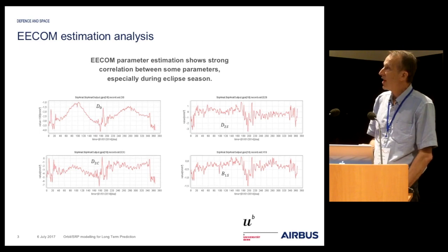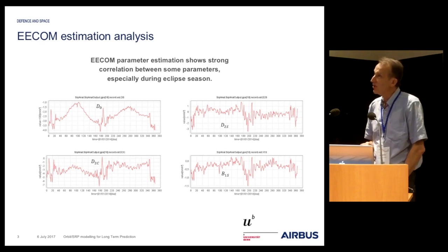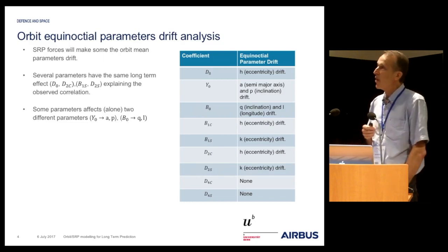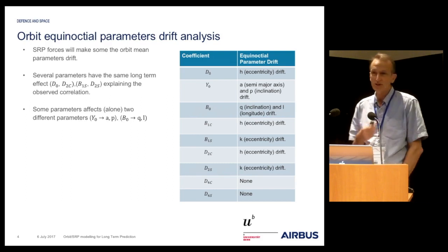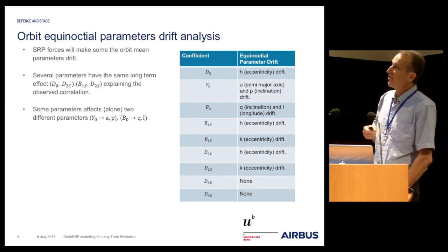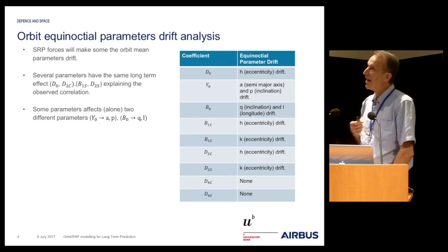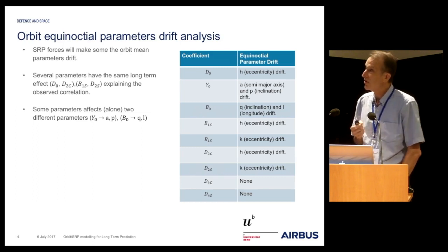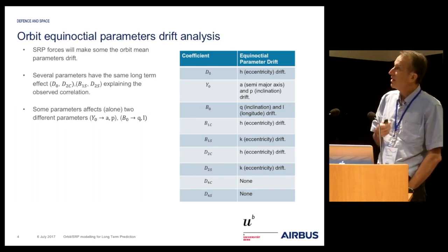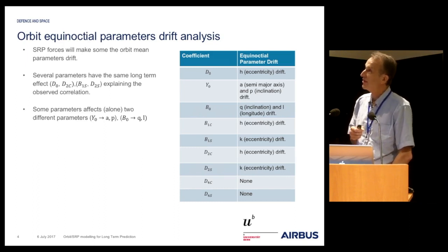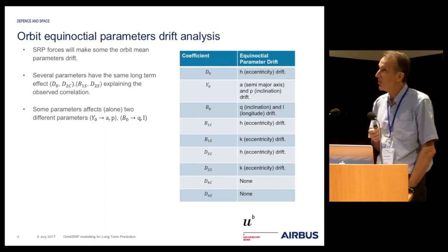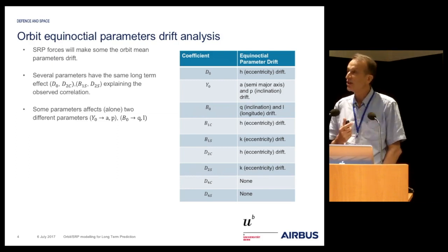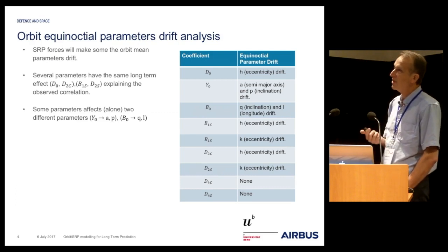To try to understand why, we performed an orbit equinoctial parameter analysis, which consists of estimating what is the impact of each ECCOM parameter on the orbit parameters. We can see on this table that some parameters impact the same equinoctial parameter. The D0 and D2C parameters affect both the eccentricity parameter, and B1S and D2S also. This explains the correlation — there is an exchange between these two parameters for the same orbit drift.